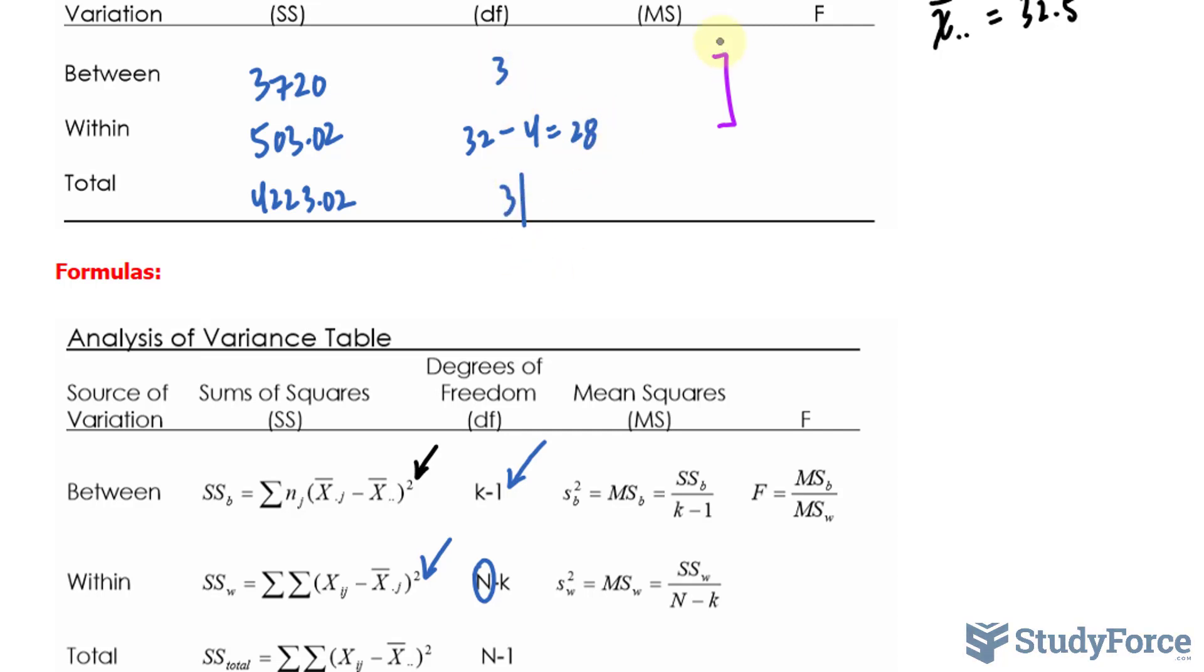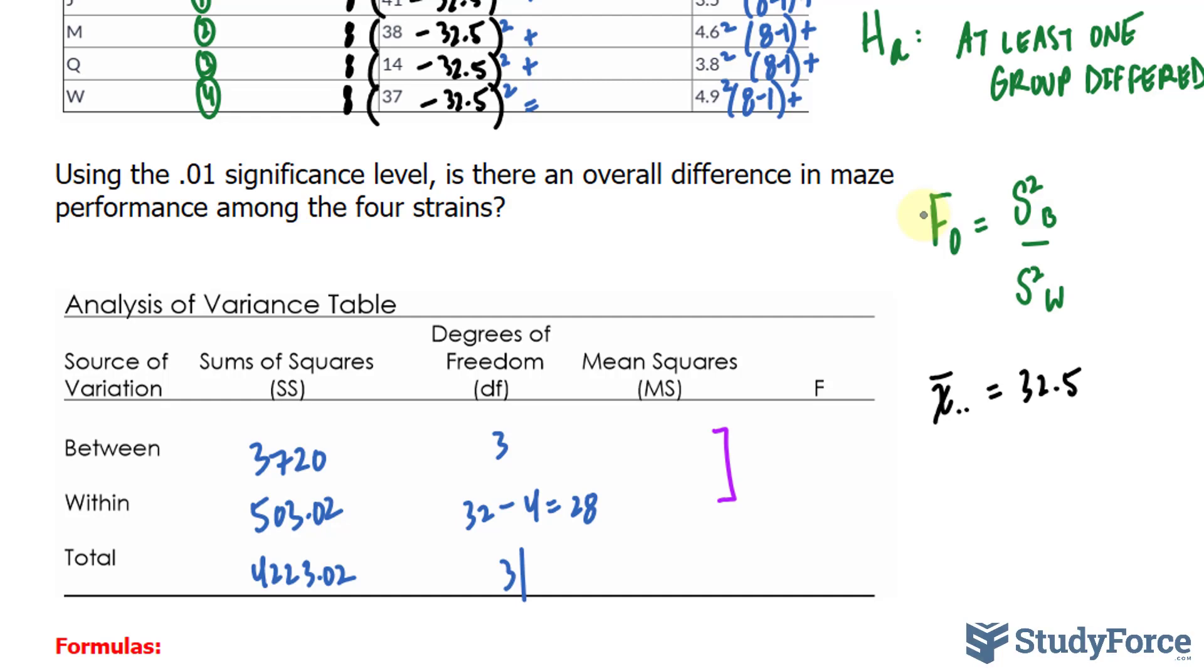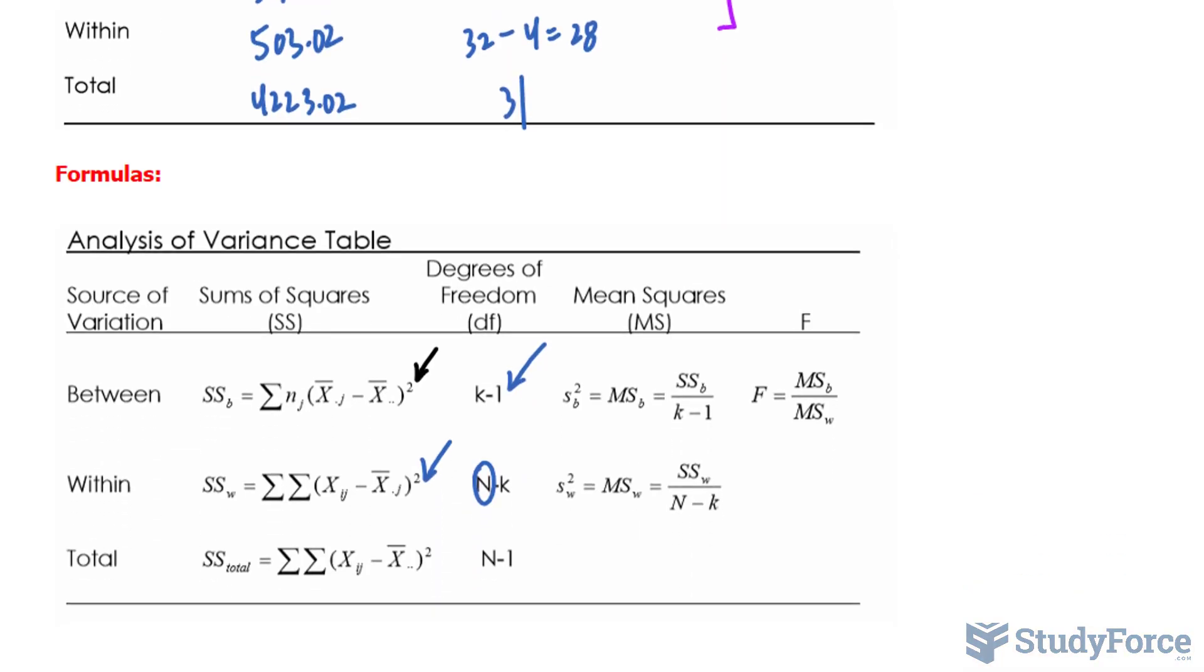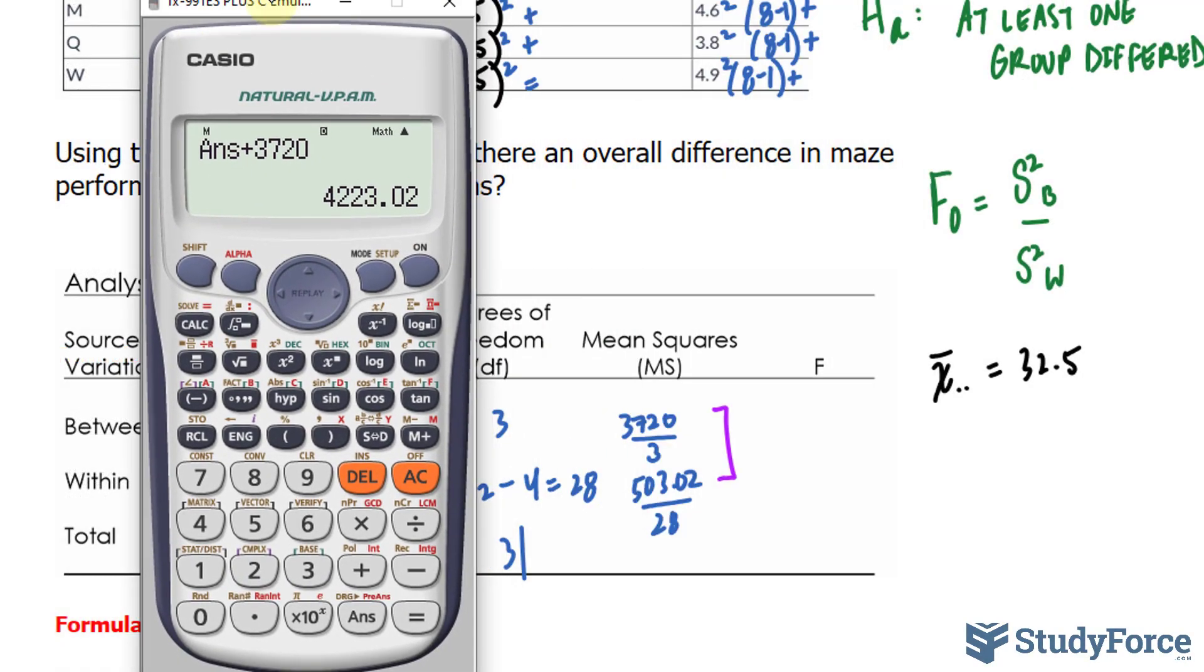Finally, the most important part is the mean squares for the between and within, because we'll need that for the f observed. The formulas for those are shown here. We'll take s as b, so the sum of squares for between, and divide it by k minus 1, or divide it by the degrees of freedom. 3720 divided by 3, and for this one, we take 503.02 and divide it by 28. Let's do it all in one step.